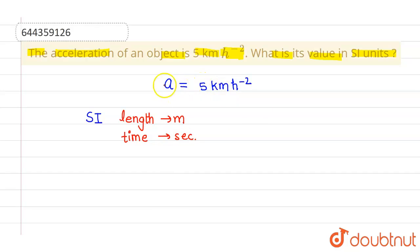And for the conversion, we also know that 1 km, in 1 km there are 1000 meters. And in 1 hour there are 60 minutes, and in 1 minute there are 60 seconds. So this will be 3600 seconds in 1 hour.